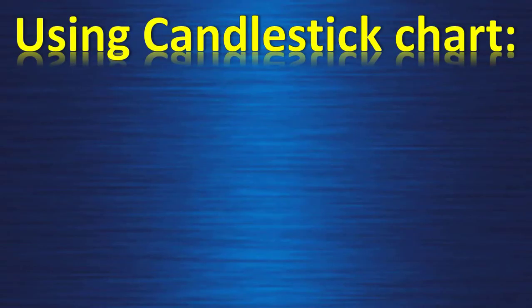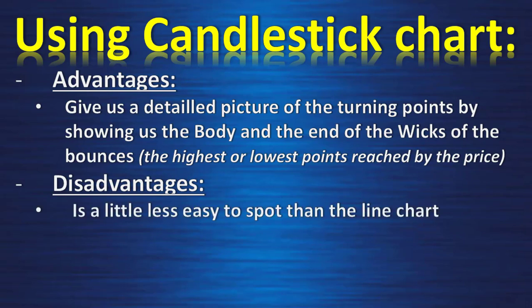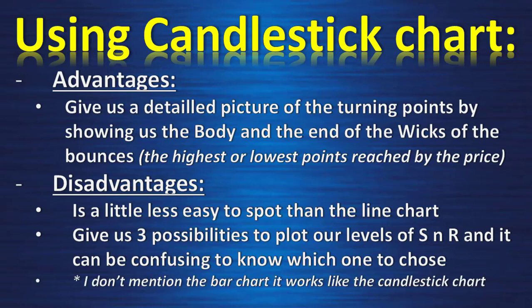Now using a candlestick chart. Advantages: it gives us a detailed picture of the turning points by showing us the body and the end of the wick of the bounce — the highest or lowest point reached by the price during a specific amount of time. Disadvantages: it's a little bit less easy to spot than the line chart and it gives us three possibilities to plot our level of support and resistance, which can be confusing when you start trading. Note: I don't mention the bar chart here — it works like the candlestick chart and gives us the same amount of information.